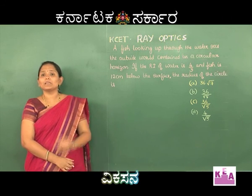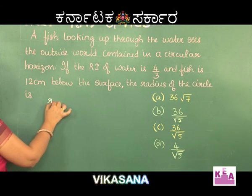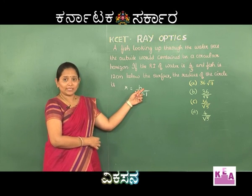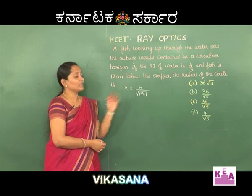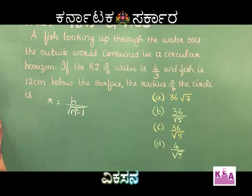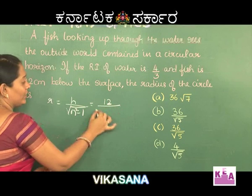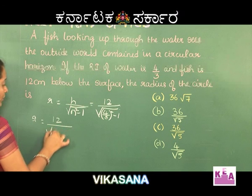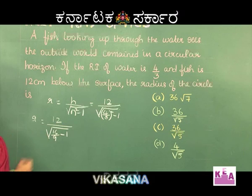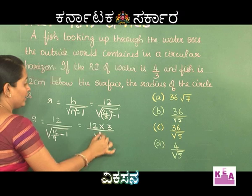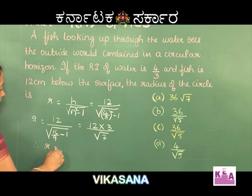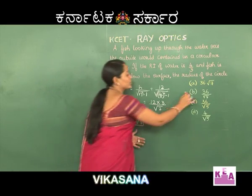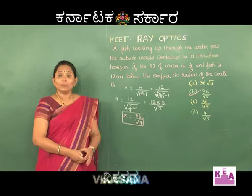The solution is straightforward using the formula R = H / √(N² − 1). The depth H is 12 cm and the refractive index N is 4/3. Substituting: R = 12 / √(16/9 − 1) = 12 × 3 / √7 = 36/√7. Therefore the answer is option B: 36/√7.